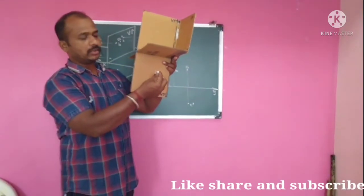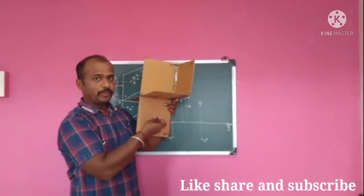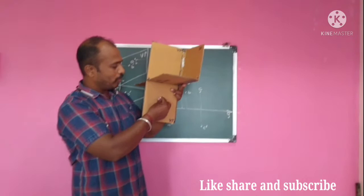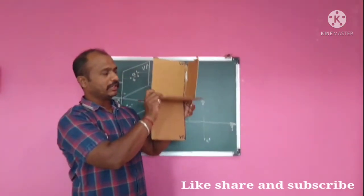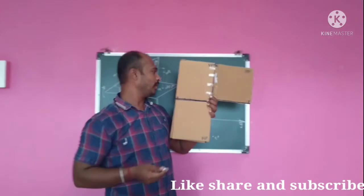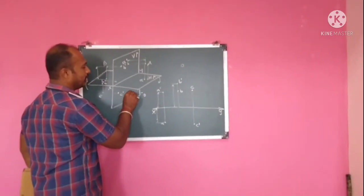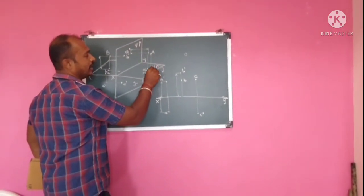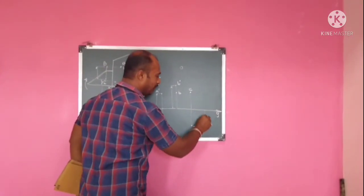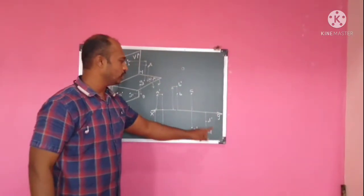If the point lies in the fourth quadrant, the point is in front of VP and below HP. Its front view will be on the VP and the top view will be on the HP. When we rotate, the front view and top view get overlapped below the XY line. So for point d: d-dash is the front view and d is the top view, and both appear below the XY line.